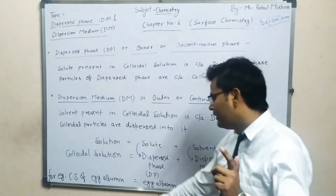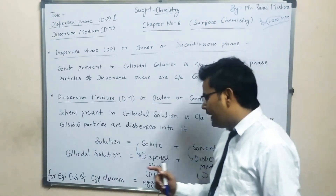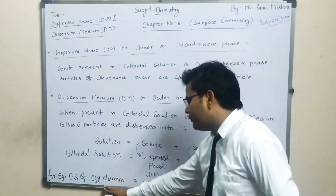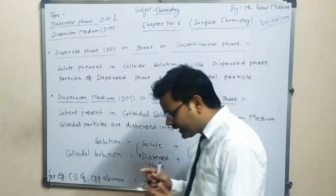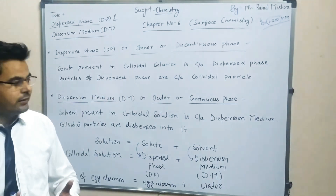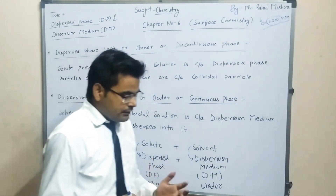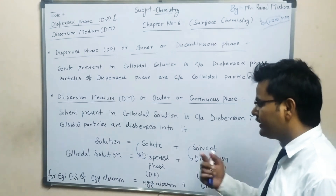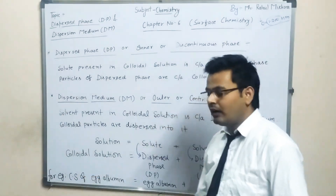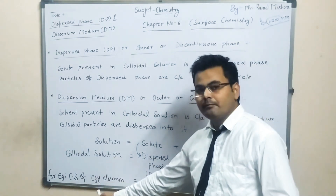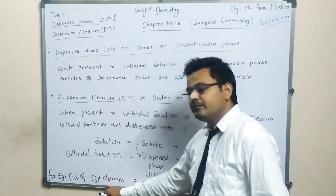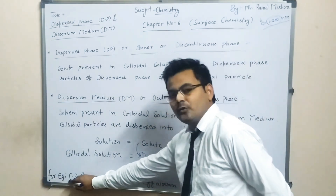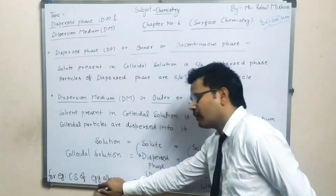When we prepare the solution of egg albumin, we dissolve egg albumin into water. Then the solution obtained is called as the colloidal solution of egg albumin. So this is the colloidal solution of egg albumin.